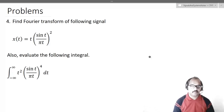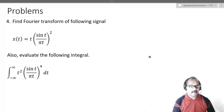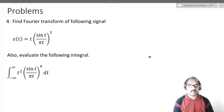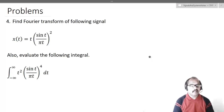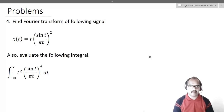Let us move on to the fourth problem. The first question is to find the Fourier transform of the signal x(t) = t·sin(t)/(πt)², and later we are asked to evaluate a given integral. We will talk about the signal first and then move on to the integral.